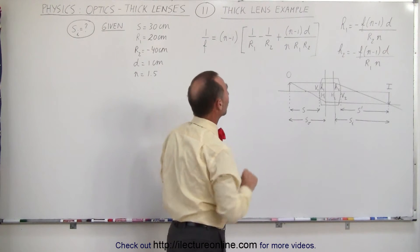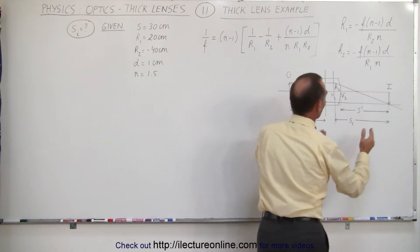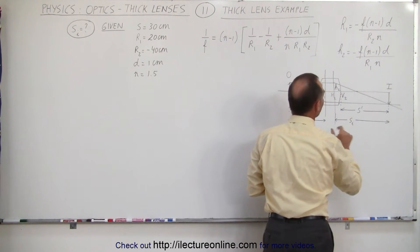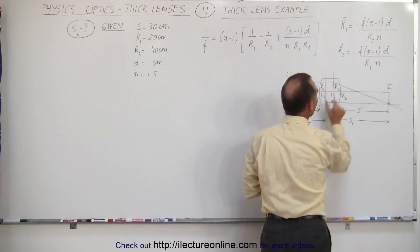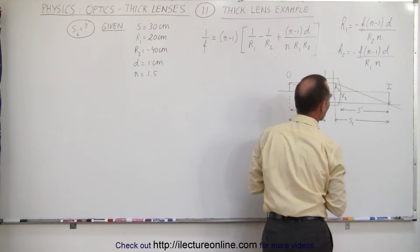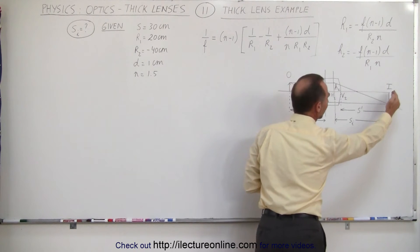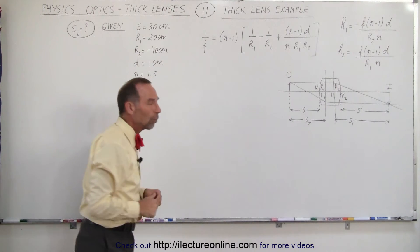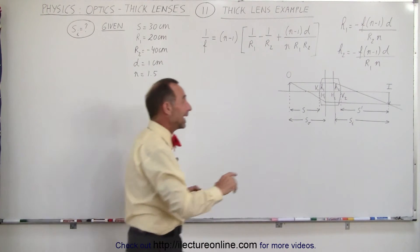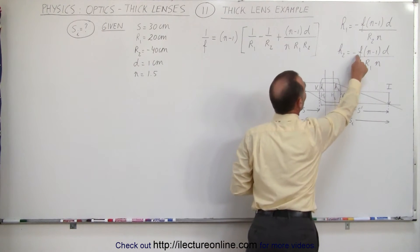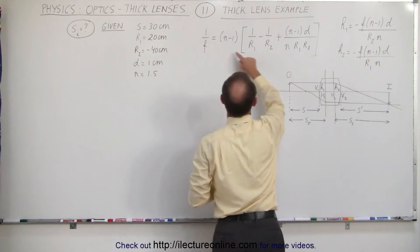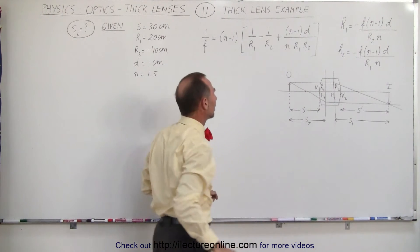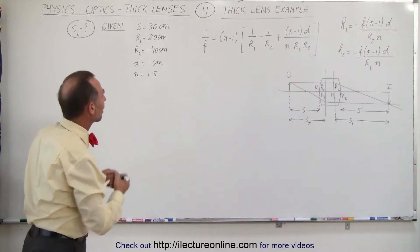Well to find that distance, we're going to need, first of all, s prime, that's the distance from the image to the lens, and then we have to add h2 to that to find the total distance from the image to the back principal plane. So what we're going to do first, because we can't find what h1 and h2 are until we know what the focal length is, so we first have to use the lens makers equation for the thick lens to find the focal length. Let's do that first.